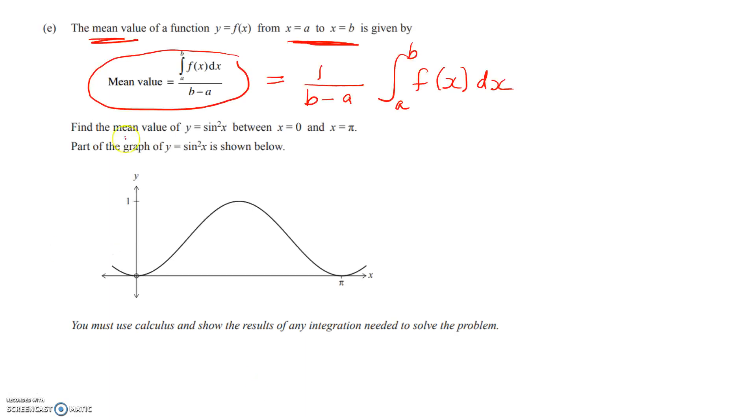So what we're asked to do in this question is to take something we haven't seen before and apply it to a situation. So we're going to find the mean value of this function, y is equal to sin squared x, between x is equal to 0 and x is equal to pi. And from looking, we can see that the function goes from 0 up to 1. So we know that our answer is going to be somewhere in between those two numbers.